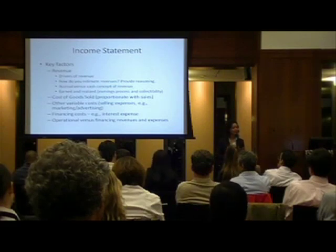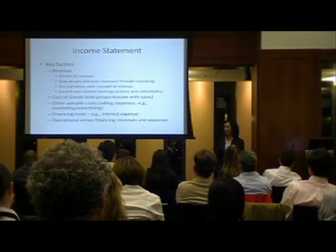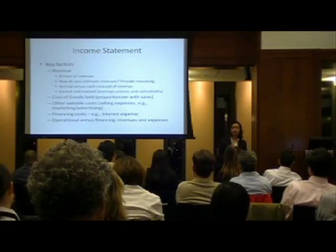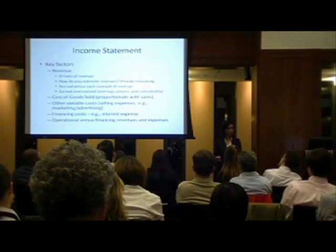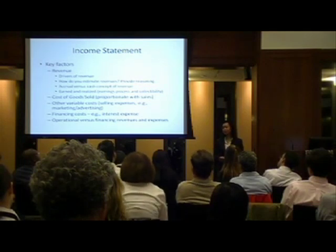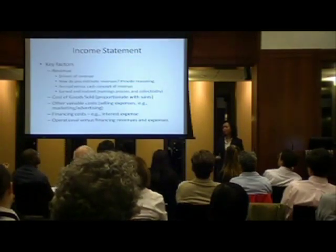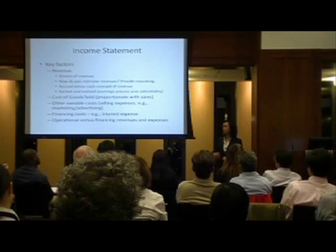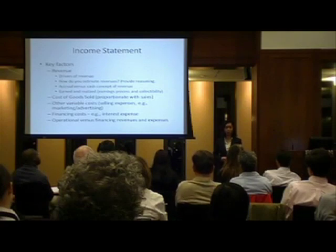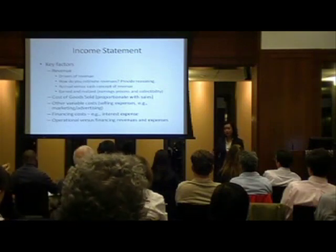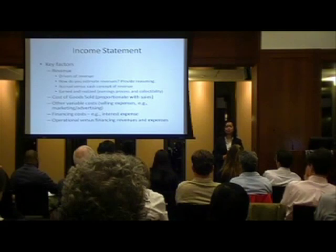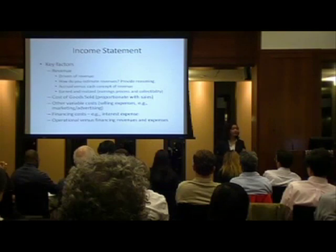A good example to wrap your head around cost of goods sold: if you're in the business of buying and selling secondhand textbooks, you buy a textbook for $10 and sell it for $15. Your profit is $5. Your revenue is $15, your cost of goods sold is $10 - the cost of the good that you sold. If you don't sell that textbook, it's not an expense - it's an asset, because you can sell it next period. An asset is anything that gives rise to a future benefit.